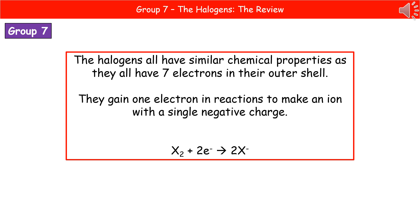Just like the alkali metals, halogens are in a single group and therefore have similar chemical properties because they all have 7 electrons in their outer shell. Group 1 has 1 electron; group 7 has 7 - same number of outer shell electrons means similar chemical properties. When they react, they gain 1 electron to form an ion with a single negative charge. The ionic equation is: X₂ + 2e⁻ → 2X⁻.